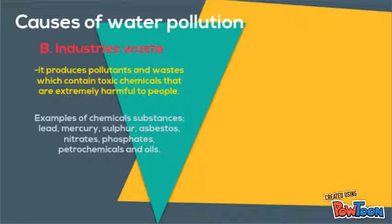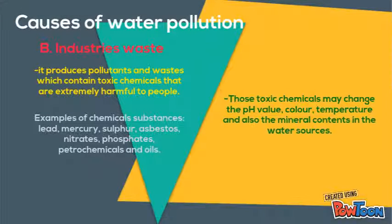Examples of chemical substances from industrial waste include lead, mercury, sulfur, asbestos, nitrates, phosphate, hydrochemicals and oils.